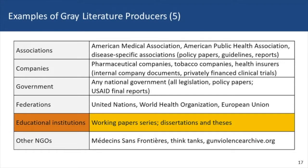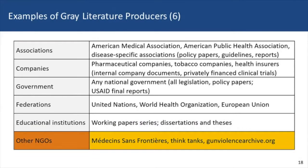Educational institutions produce materials — particularly in areas like economics and computer science, working paper series that you won't find in the classic journal literature. Dissertations and theses are a rich source of information; so much effort goes into these, and it would be nice to mine those as you develop your research. There are also many non-government organizations — depending on your area of focus, they may be the only ones with the information you need. Médecins Sans Frontières goes into areas others don't and can give you reports on situations others can't. There is also a non-profit devoted specifically to collecting daily statistics on gun violence in America.